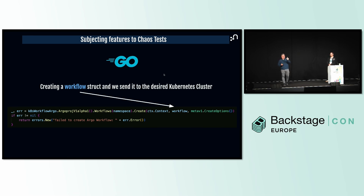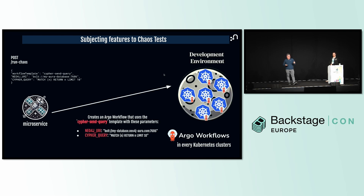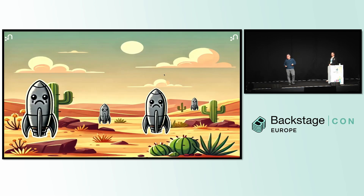This microservice knows which Kubernetes cluster to create the Argo workflow in based on the Bolt URI. Anyone at Neo4j can use this microservice to create any Argo workflows based on any workflow templates — they just have to provide all the necessary parameters.